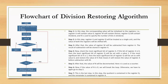Step 2: Register A and Register Q will be treated as a single unit and the values of both registers will be shifted left. Step 3: After that, the value of Register M will be subtracted from Register A. The result of the subtraction will be stored in Register A.